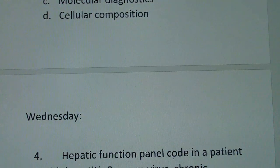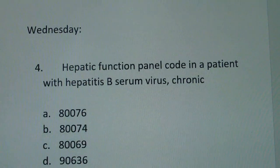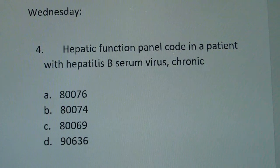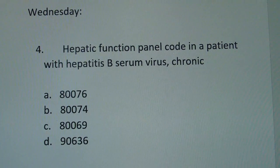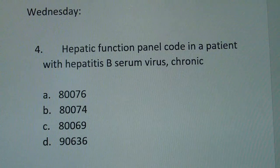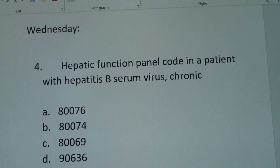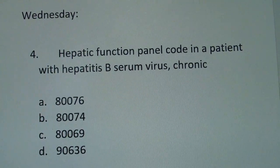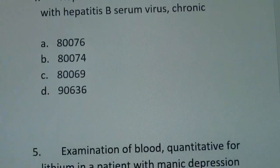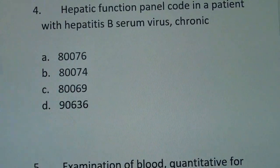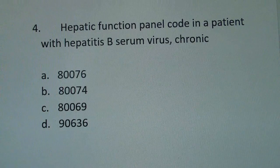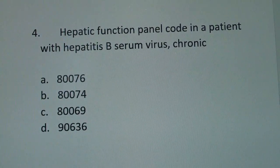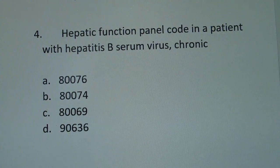Alright, today's first question: how would you code a hepatic function panel in a patient with hepatitis B serum virus chronic? Your choices are: A. 80076, B. 80074, C. 80069, or D. 90636.